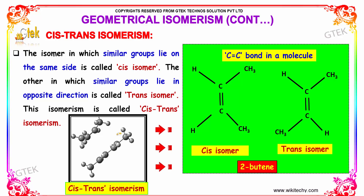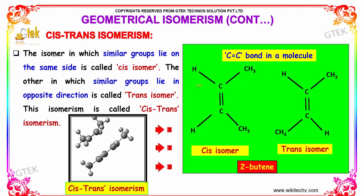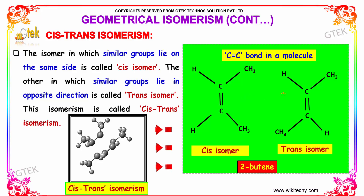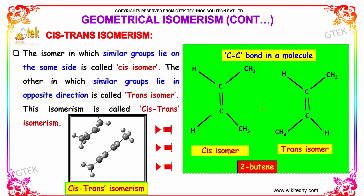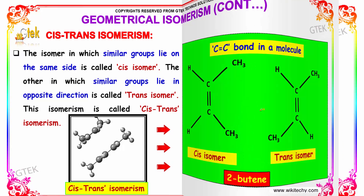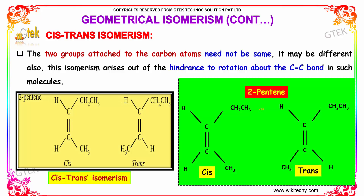The isomer in which similar groups lie on the same side is called the cis isomer. The isomer in which similar groups lie in the opposite direction is known as the trans isomer. This isomerism in general is known as cis-trans isomerism. The two groups attached to the carbon atoms need not be the same — they may be different. This isomerism generally arises when there is steric hindrance about the C=C bond preventing rotation.